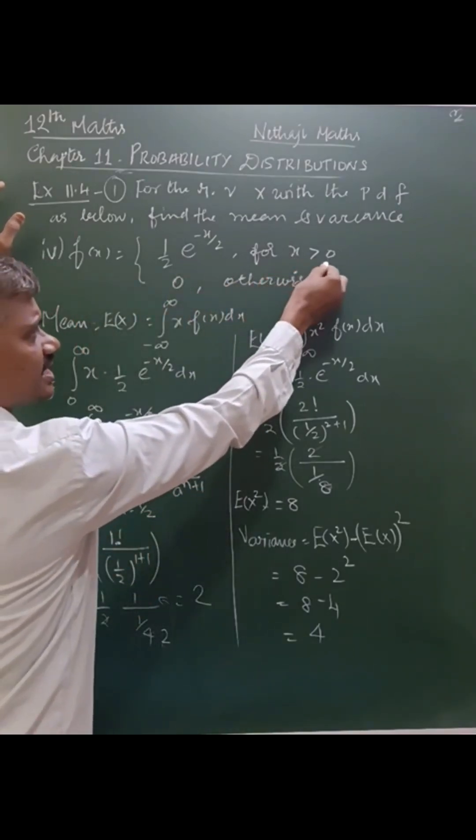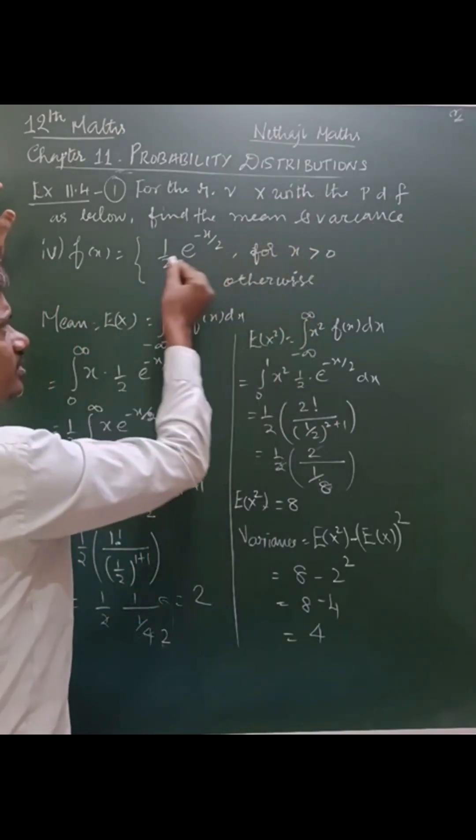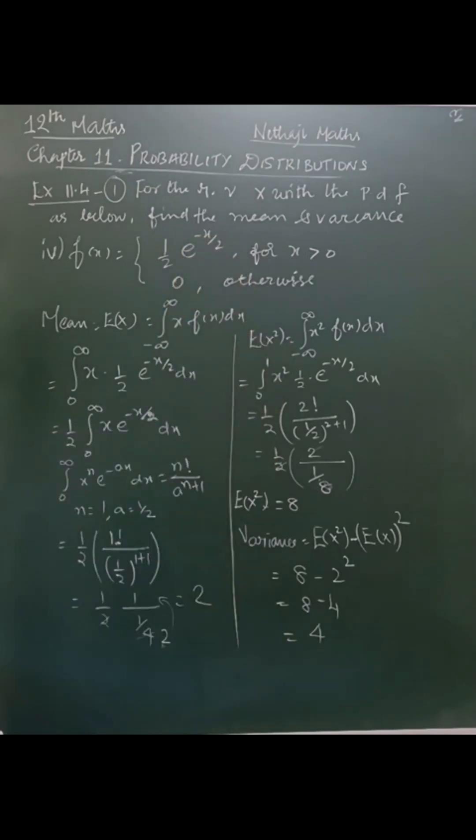f(x) is defined for x greater than 0, or 0 to infinity, as one-half into e power minus x by 2, and 0 otherwise.